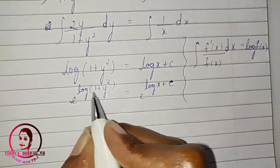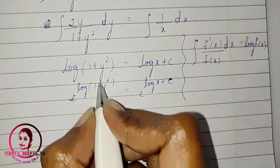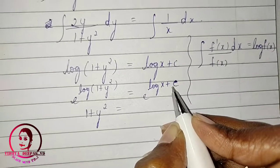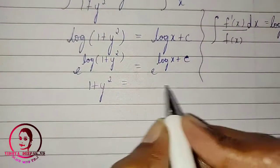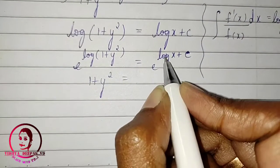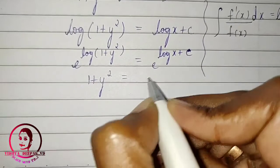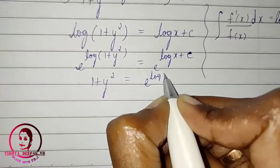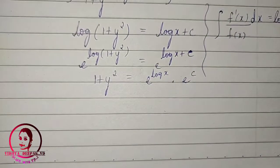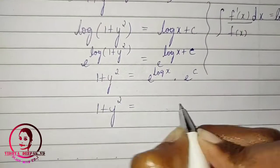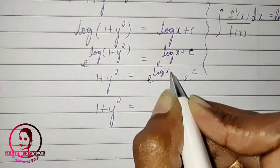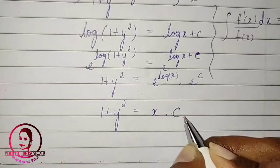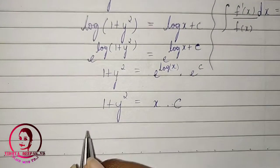Using the formula e^(log(x)) = x, and splitting e^(log x + c) as e^(log x)·e^c, we get 1 + y² = x·e^c. Since e^c is a constant, we write it as c. So 1 + y² = cx, which is our general solution.